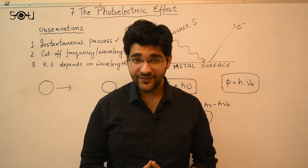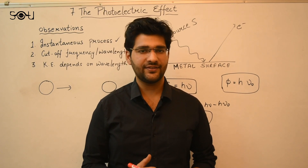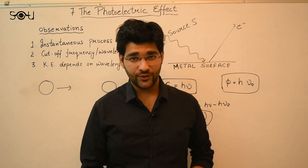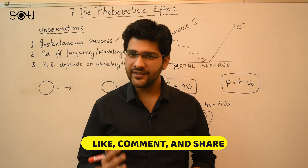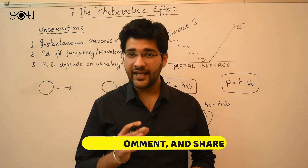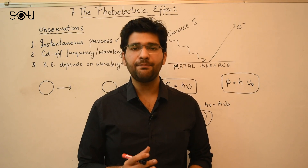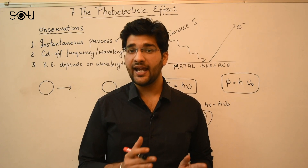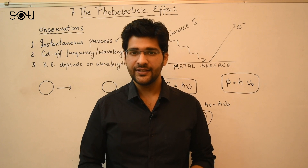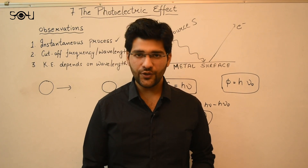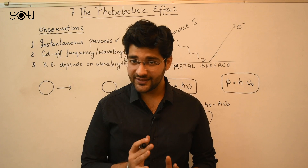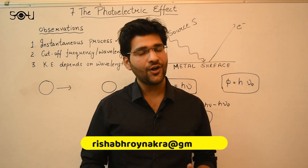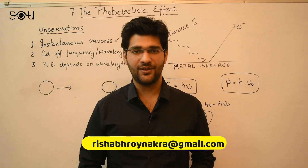Albert Einstein received the 1921 Nobel Prize in Physics for his explanation of the photoelectric effect. In the next video, we'll learn about another important quantum effect that can only be explained using the particle nature of light and has applications in quantum physics and astrophysics — the Compton effect. Make sure you like this video and subscribe to the channel, and if you have any questions, email me or type in the comment section below. Thank you.